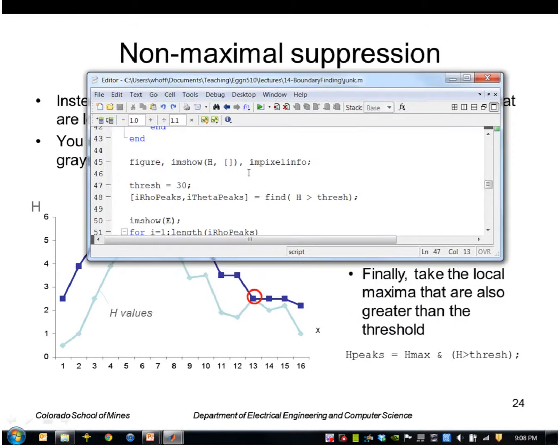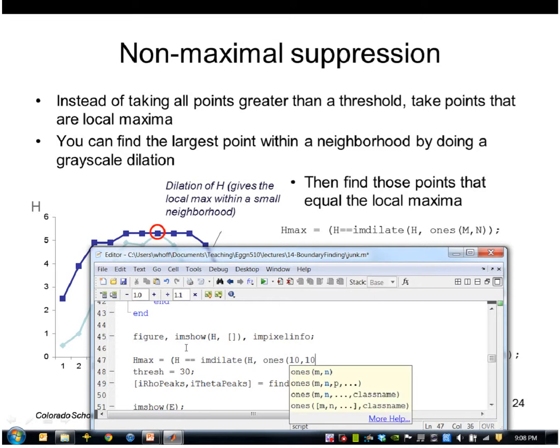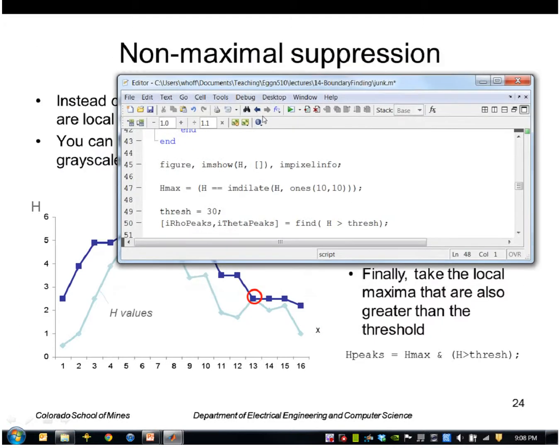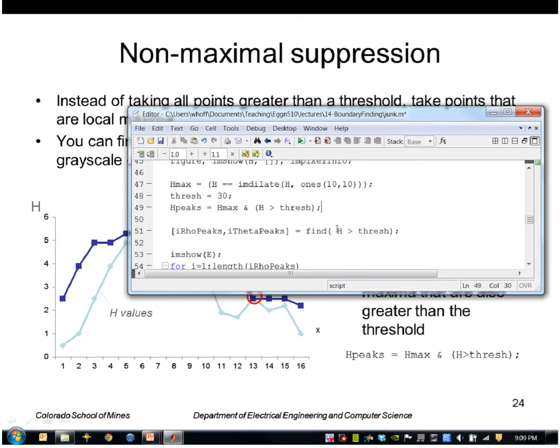So let's put that into our program here. So once I find H, I will look for the maxima, the local maxima, let's say size 10 by 10. And then I'll find the peaks by ANDing that with H greater than threshold. I have to put this up here.